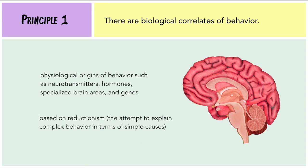The first principle states that there are biological correlates of behavior. For instance, certain neurotransmitters or hormones have an effect on our behavior. We can also connect this to localization of function in the brain, which suggests each area of the brain is responsible for coordinating a certain part of our body and nervous system, thus affecting our behavior. The biological level of analysis is based on reductionism, which attempts to explain complex behavior in terms of simple causes.